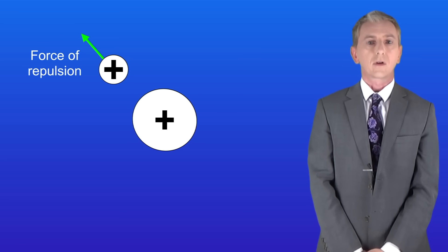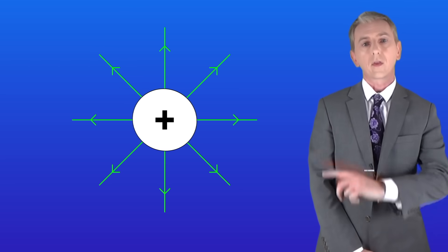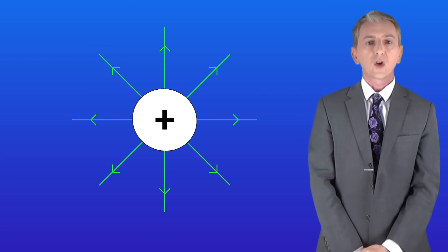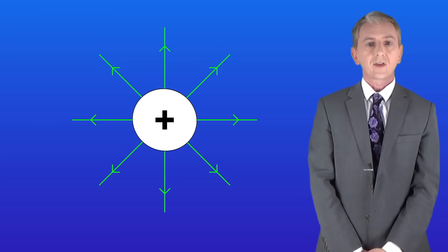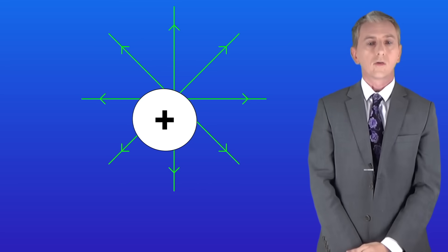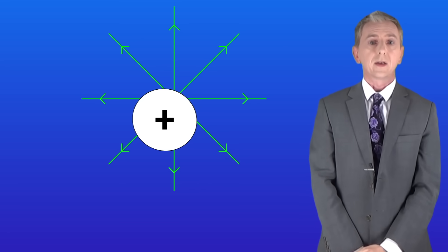Scientists show an electric field using field lines like this. These lines must be perpendicular to the surface of the object, in other words at a 90 degree angle. So for example, this is not correct. The lines are not perpendicular to the surface.